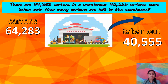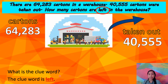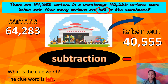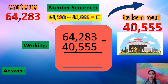In this word problem, there is a clue word. The clue word is left. When the clue word is left, the math operation you are going to use is subtraction, and you use the minus sign. The number sentence is 64,283 minus 40,555 equals blank. This is the working — you are going to use this space to solve for the answer.